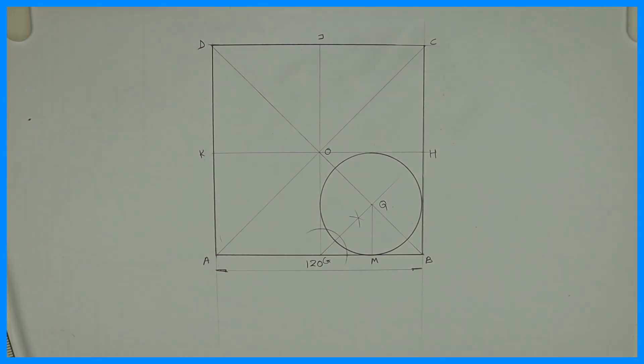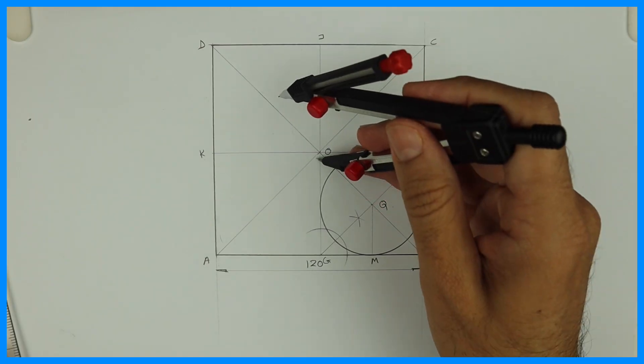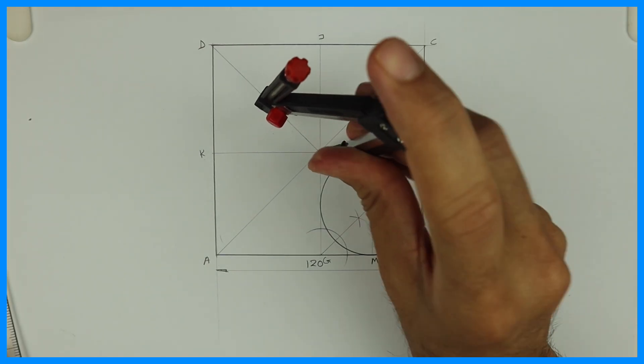So we got point Q. From Q you draw straight line M. Take Q to M and draw circle. Now after that you take Q to O and transfer.